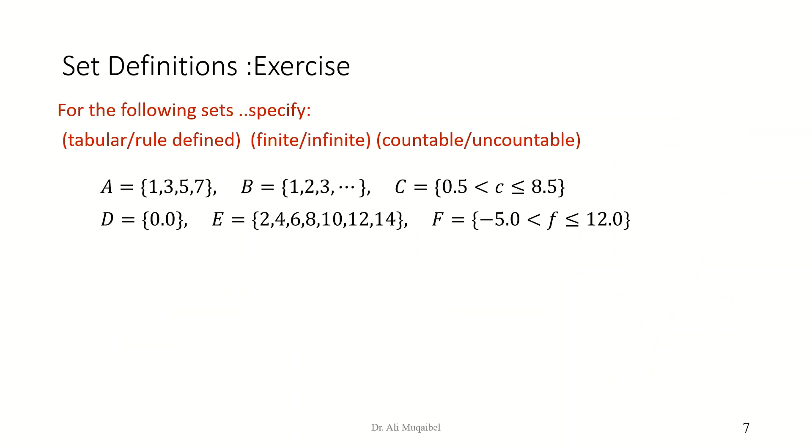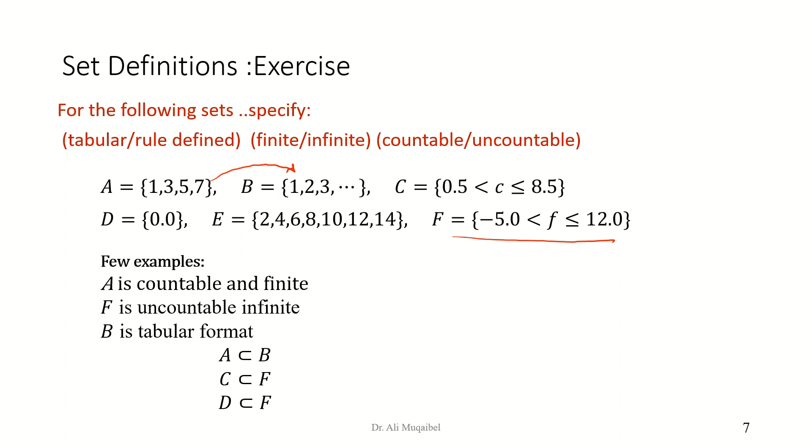Now here are some examples for you to go over as an exercise. I'm giving you a few sets, A, B, C, D, and F. And it's your job to describe them being finite, infinite, or countable, uncountable. Are we using a tabular definition or rule definition? So just to give you some descriptions. We can say, for example, that A is countable and finite. F is uncountable and infinite. Then we have B is presented in a tabular format because we are listing all the elements. A is a subset of B because it contains only the odd numbers. I would assume this will continue, 4, 5, 6, 7. We can also say that C is a subset of F because this range is smaller than the F range. And we can also see that D, which is 0,0, is a subset of the continuous range.